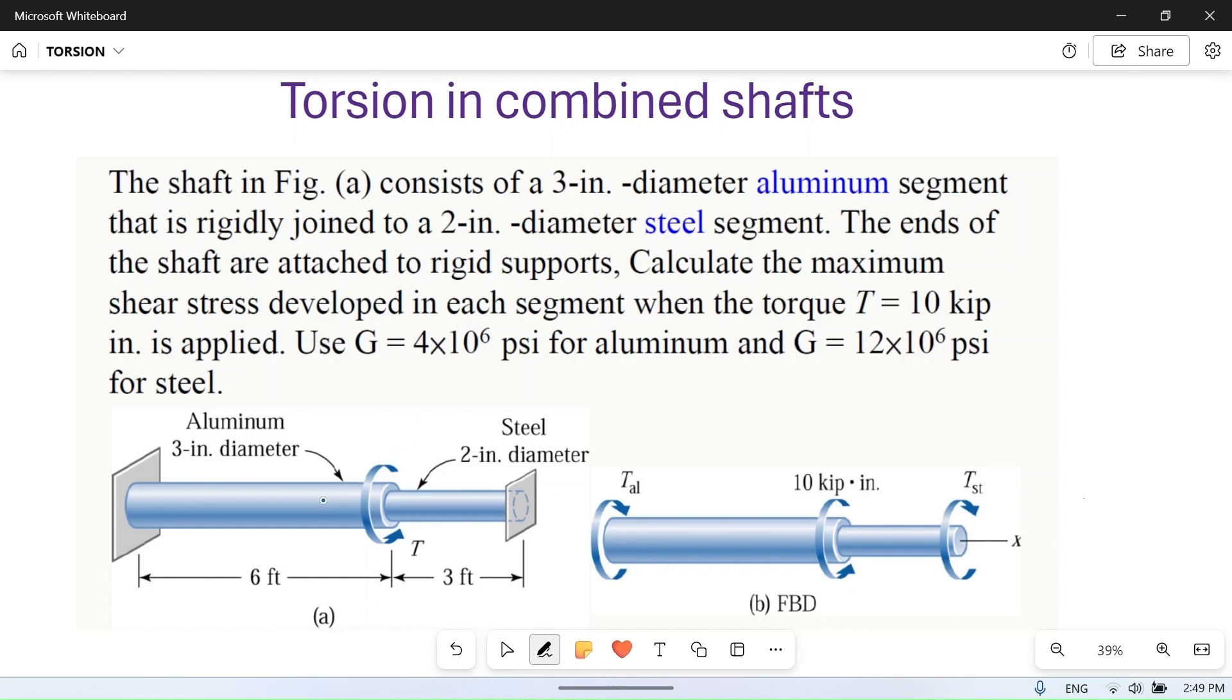the sum of torque taken by each shaft. Calculate the maximum shear stress developed in each segment when torque T = 10 kip-inch is applied. Use G = 4×10^6 psi for aluminum and G = 12×10^6 psi for steel. All units are given in inches and psi, so we will convert everything to inches, psi, and pounds.